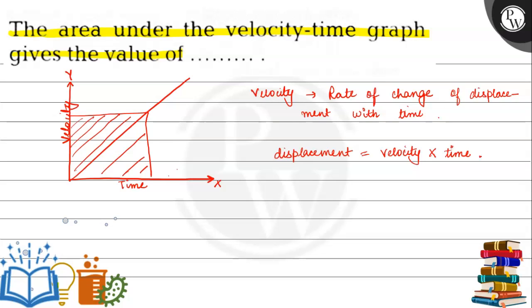Since velocity is the rate of change of displacement with time, and velocity times time gives us the area under the graph, this area represents displacement.